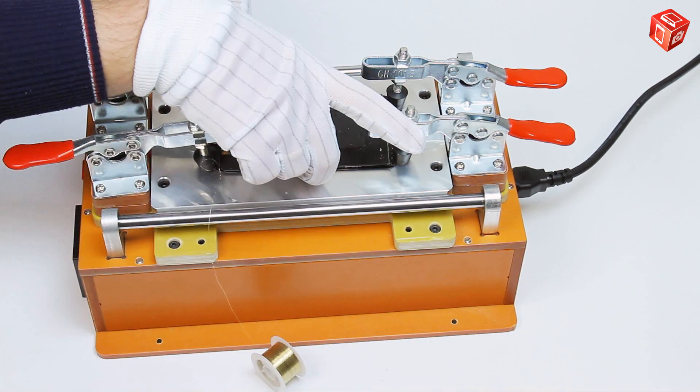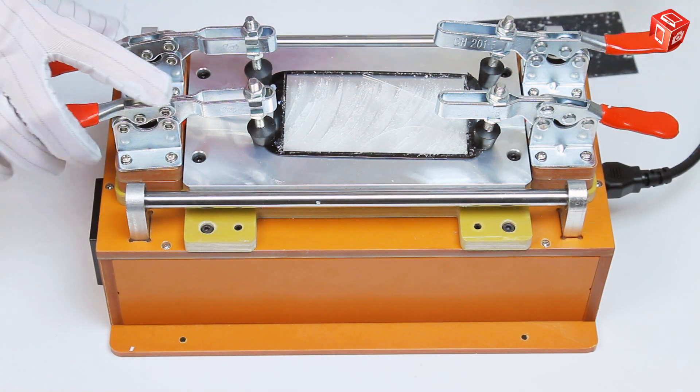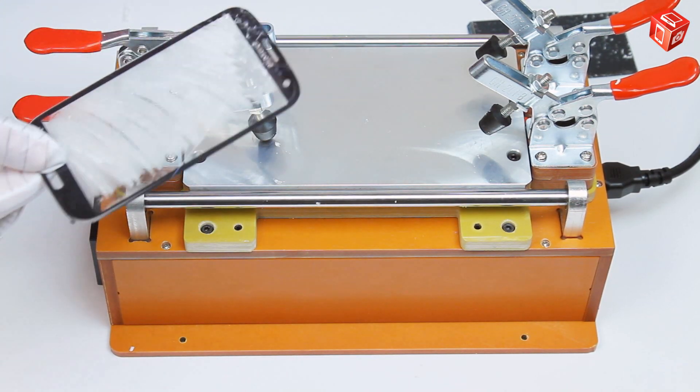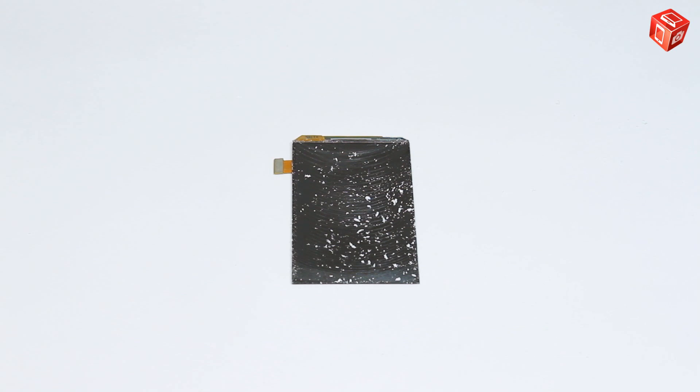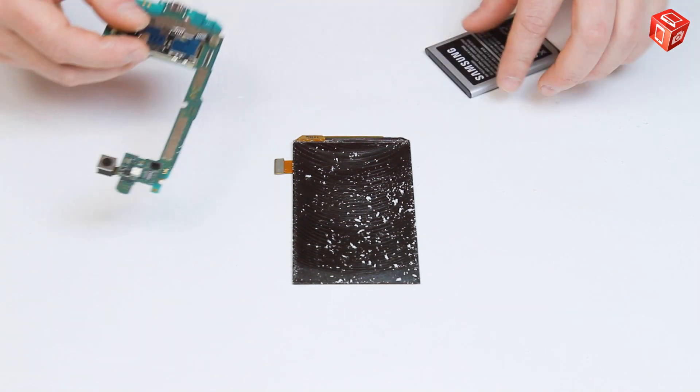When the glass is removed from the display module, take the module off the separator. Make sure the module is working.